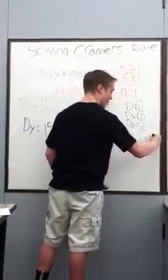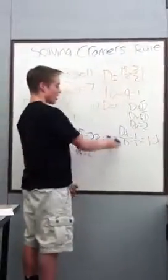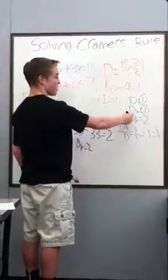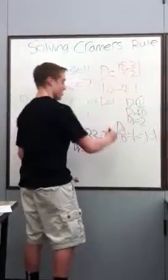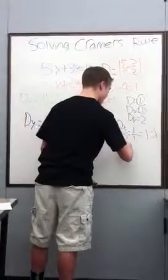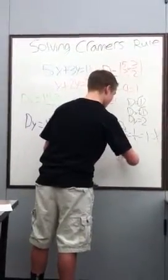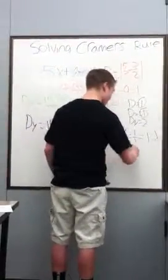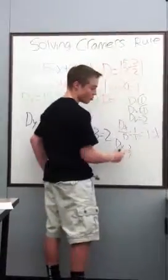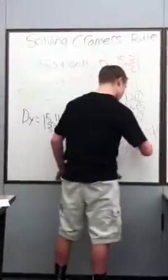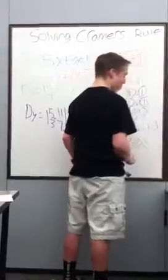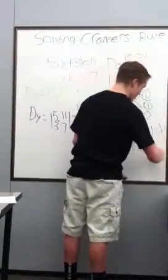So this 1 is the x value. Now I'm doing the same thing with Dy. Dy over D is equal to 2 over 1. 2 over 1 is 2. So y is equal to 2.